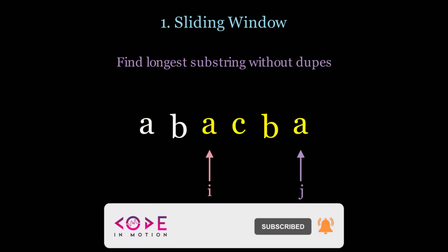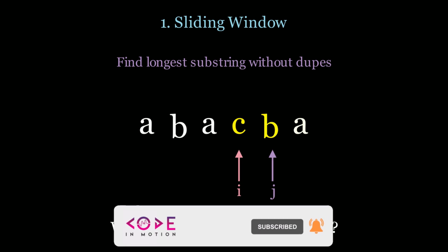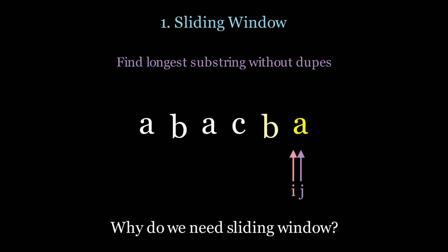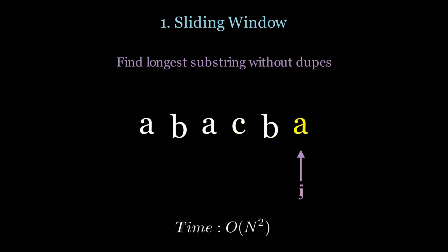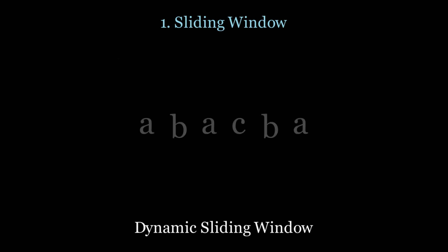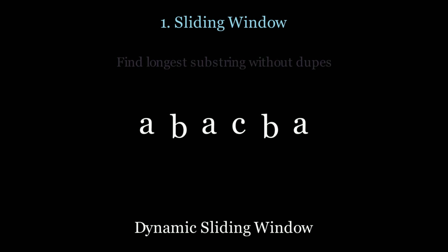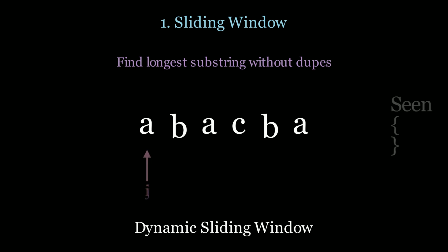We start our i and j pointers and move j until we find the duplicate, but the problem with this is that the time complexity is O(n²). Can we do better? Can we be more optimal? Let's take a look at the same problem using the sliding window technique.